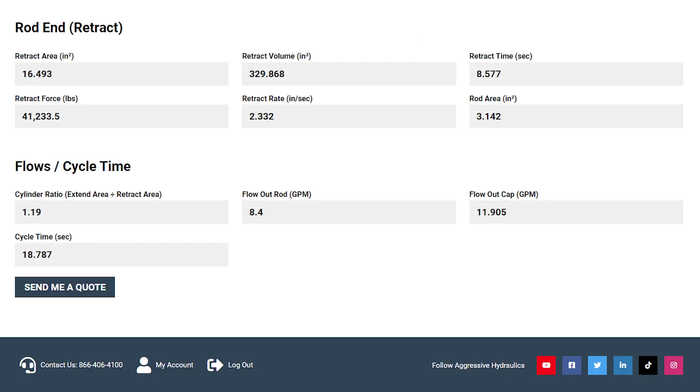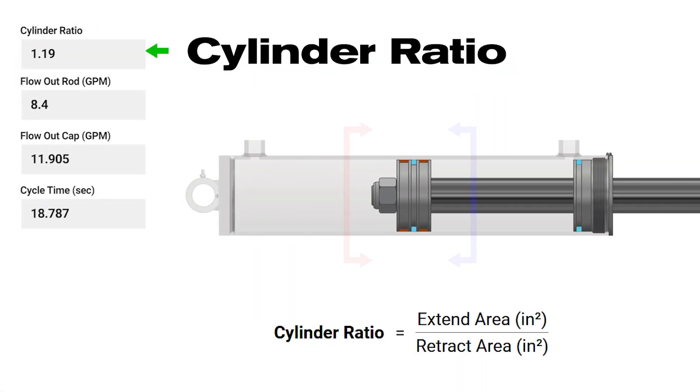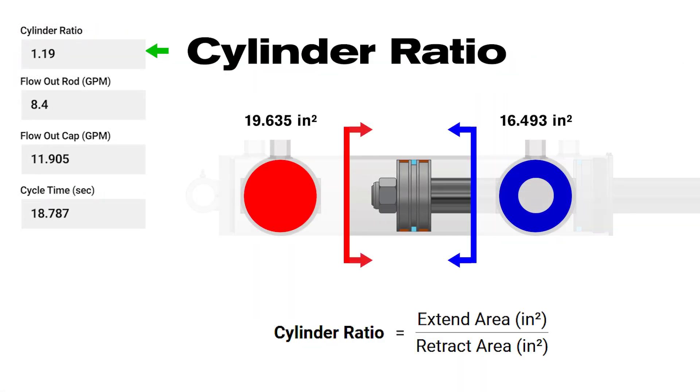Lastly, let's review the flow and cycle time calculations. Cylinder ratio is the ratio of the extend and retract areas. The extend side of a single rod hydraulic cylinder has more area than the retract side.